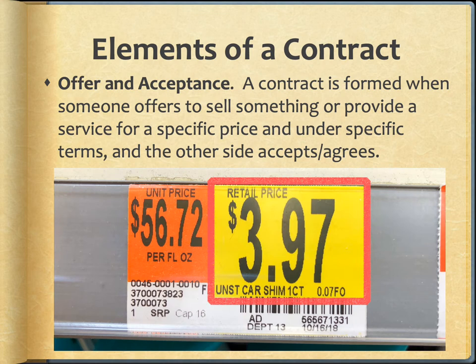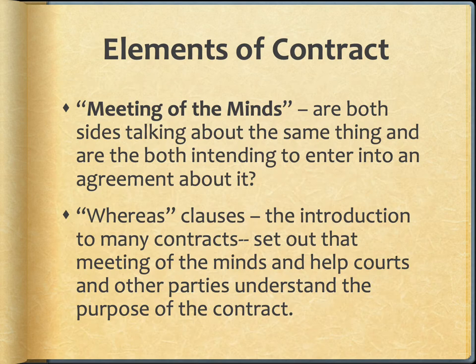Let's go through the basic elements of a contract. The most critical element that actually defines a contract is offer and acceptance. A contract is formed when someone offers to sell something or provide a service for a specific price, under specific terms, and the other side agrees and accepts it. A key behind this is the meeting of the minds — are both sides actually talking about the same thing and intending to enter into an agreement about it? If someone is selling ice, meaning frozen water, and the other person thinks they're buying ice, meaning diamonds, you don't have a contract.